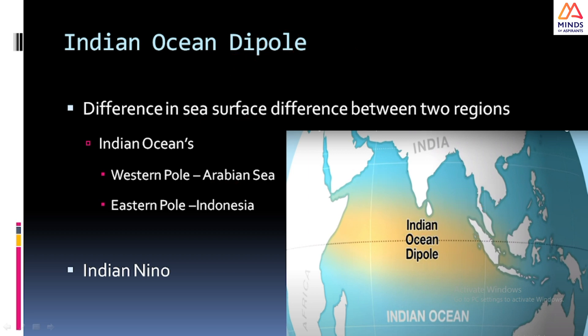The Indian Ocean Dipole is also called the Indian Niño. Just as we have the concept of El Niño and La Niña in the Pacific, this Indian Ocean Dipole represents a similar phenomenon called the Indian Niño.